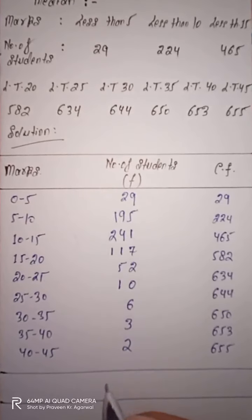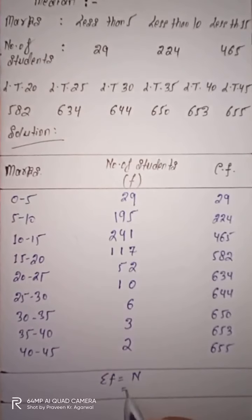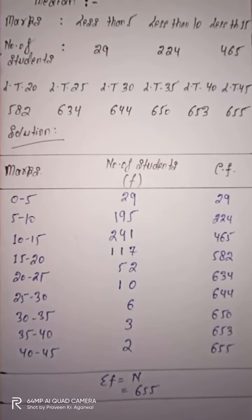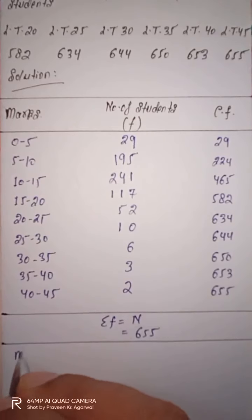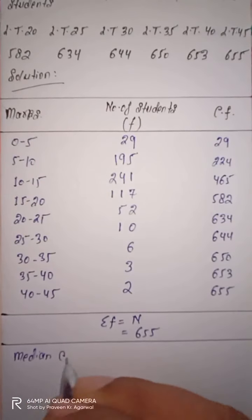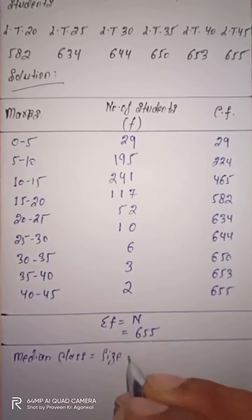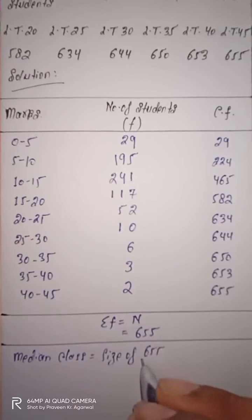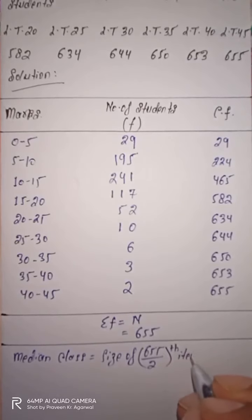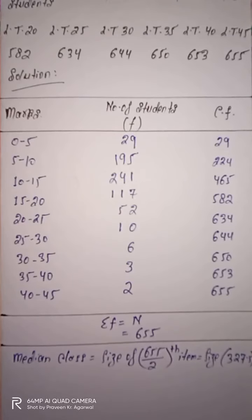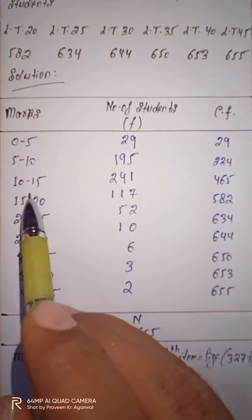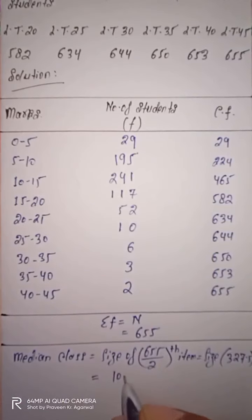The total summation of f equals N, which automatically equals 655, because the last cumulative frequency value represents N. Now to find the median class: size of the N/2-th item = 655/2 = 327.5. Searching in the cumulative frequency: 29, 224, 465 — 465 is the first CF value greater than 327.5. So the median class is 10 to 15.